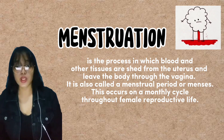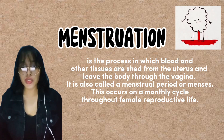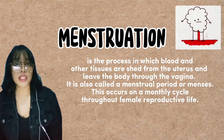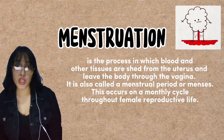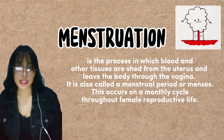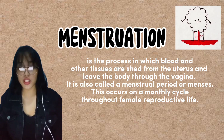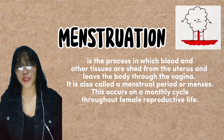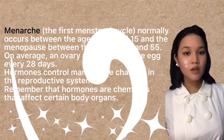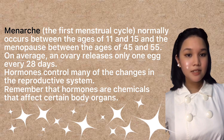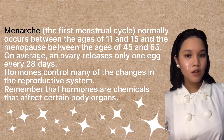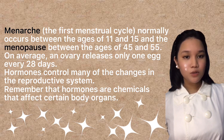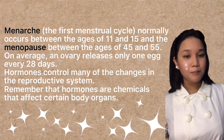Menstruation is a process in which blood and other tissues are shed from the uterus and leave the body through the vagina. It is also called the menstruation period or menses, and occurs on a monthly cycle through a female's reproductive life. Menarche, or the first menstrual cycle, normally occurs between the ages of 11 and 15, and menopause between the ages of 45 and 55.